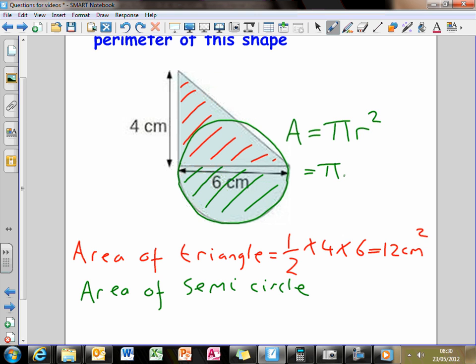To do that, that's pi times 3 squared. Why is r 3? Well, you've got to think, well the diameter is 6, if you half that you get 3. So, the area of the full circle is pi times 3 squared. So, that's going to be,